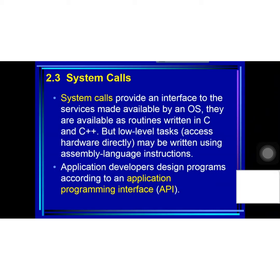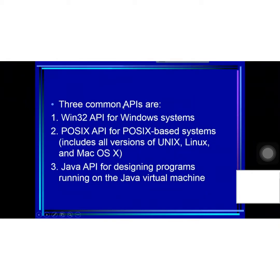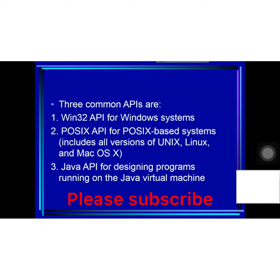Application developers design programs according to an application program interface, such as the Win32 API. Three common APIs are: first, the Win32 API for Windows systems; the POSIX API for POSIX-based systems, which includes all versions of Unix, Linux, and Mac OS X; and the Java API for designing programs running on the Java Virtual Machine.